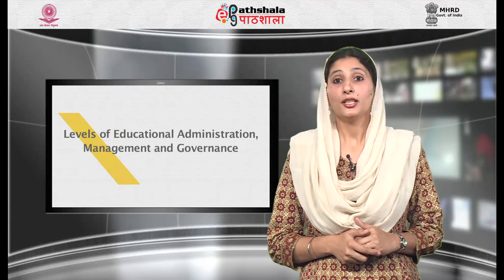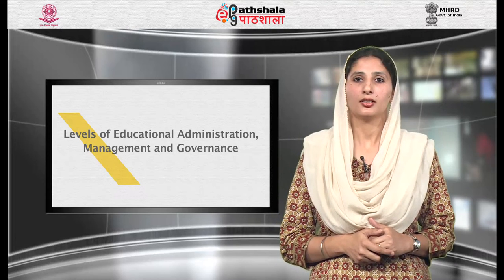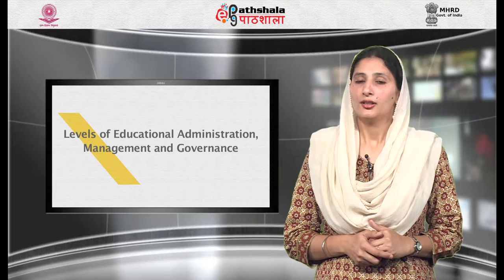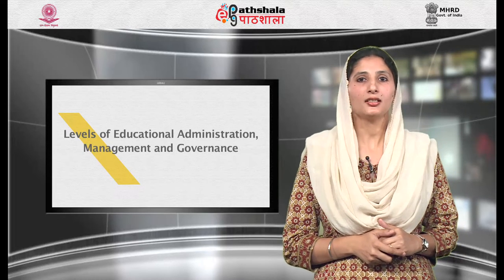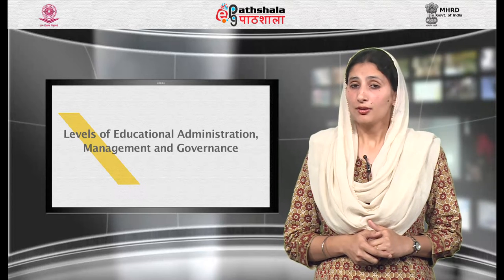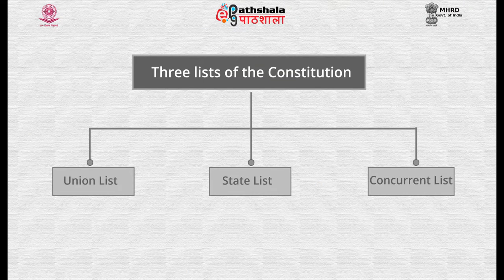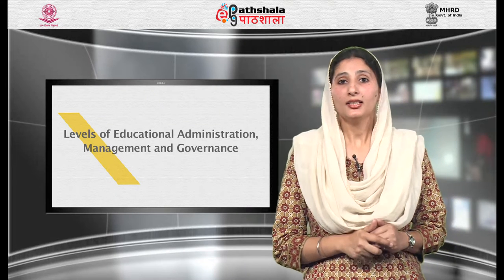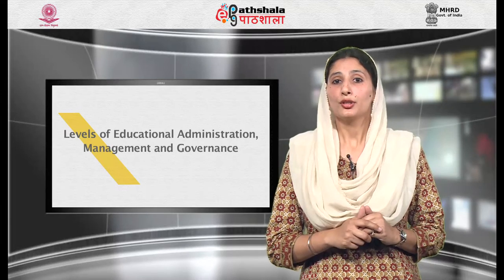India currently has 29 states and seven union territories. The state organizations and institutions are divided by districts and blocks. The responsibilities of the different levels of government are also explained in detail by the constitution. The Seventh Schedule of the constitution, that is Article 246, has three lists: Union List, State List and Concurrent List, which includes the jurisdiction of both central and state government.